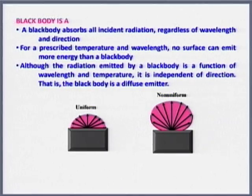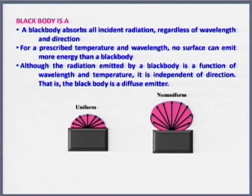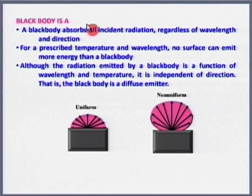What is so ideal about a black body? A black body absorbs all the incident radiation which falls onto it, regardless of the wavelength — whether it is a smaller wavelength or a larger wavelength, all incident radiation is absorbed. Nothing is reflected.